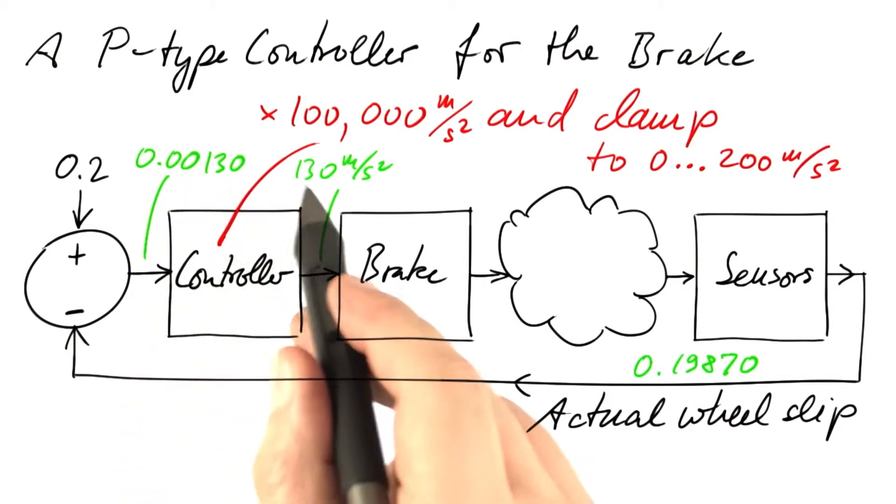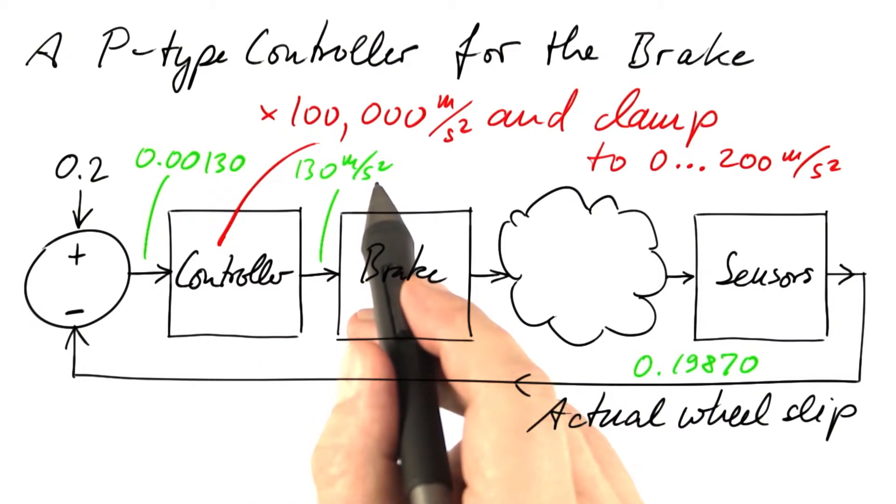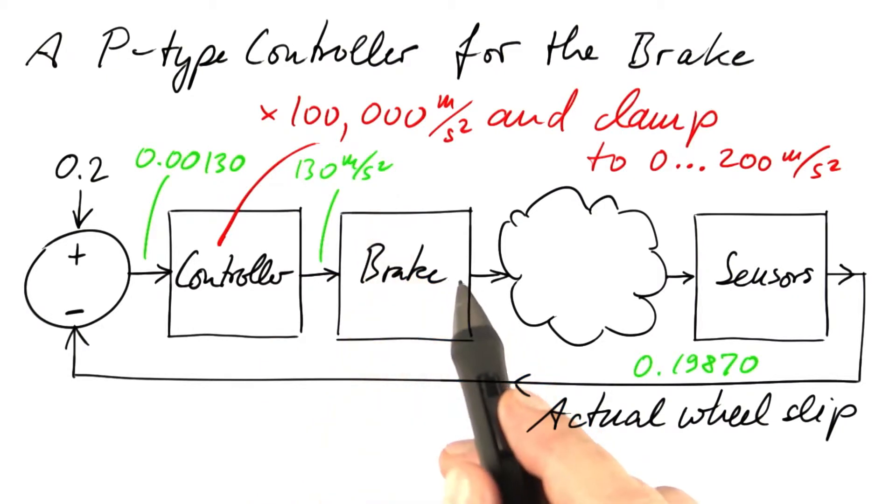The controller is going to return the same number again, 130 meters per second squared. So this would constitute an equilibrium.